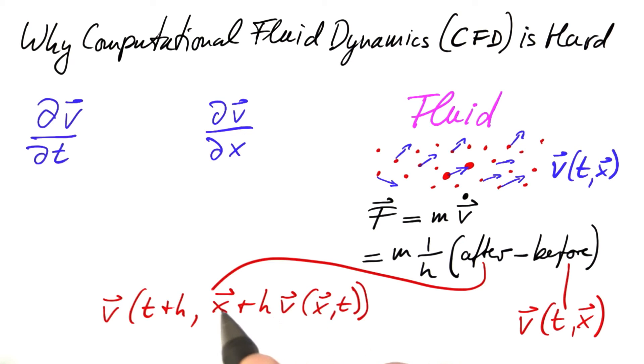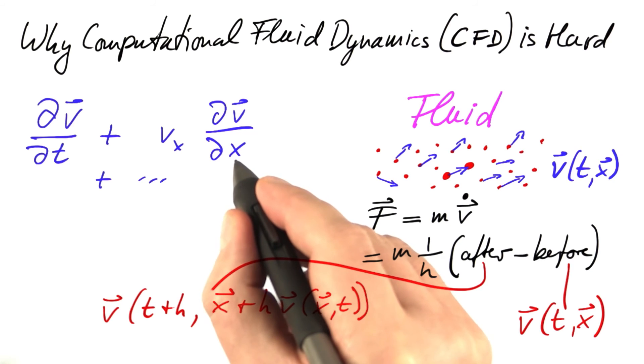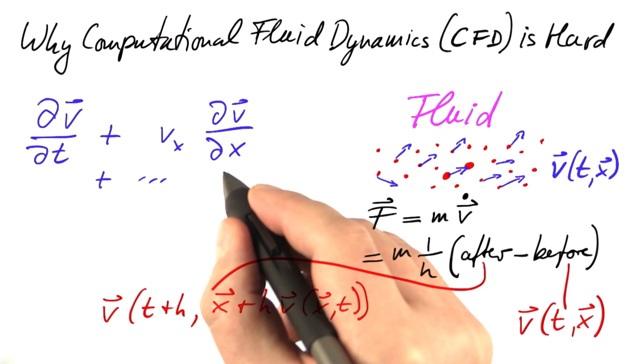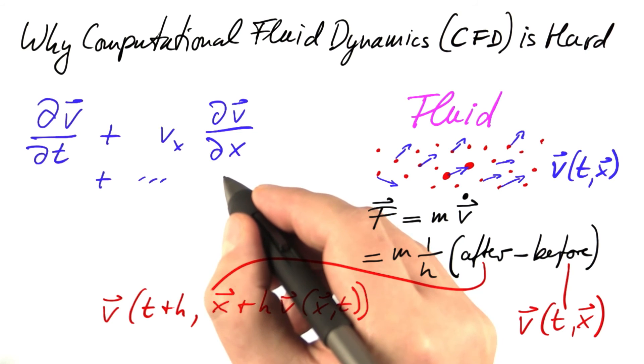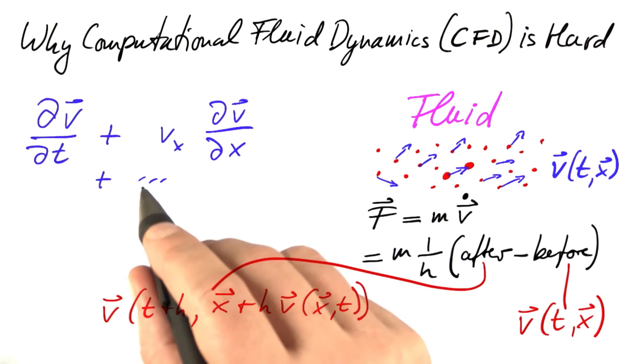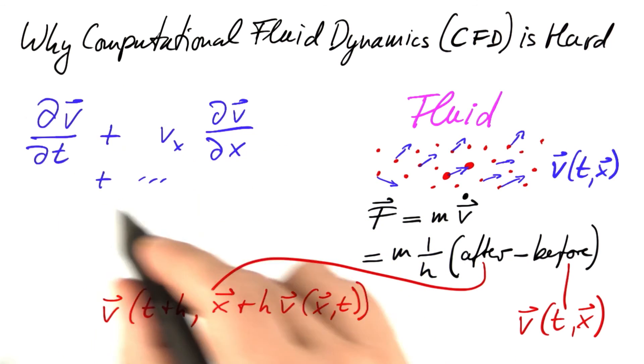And the larger the velocity is, the more effect the spatial derivative has. What we get in the end is the x component of the velocity times the partial derivative of the velocity with respect to x. And of course, the same happens with y and z. This is going to be the acceleration.